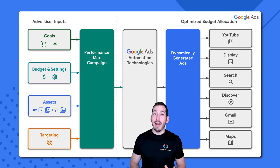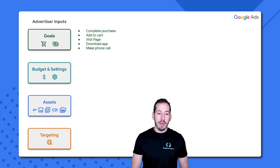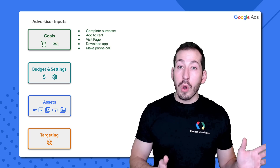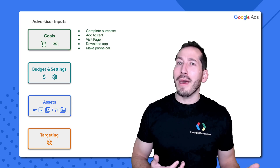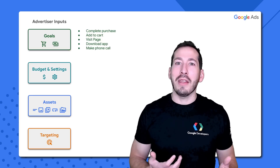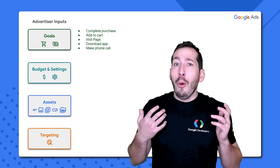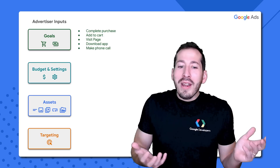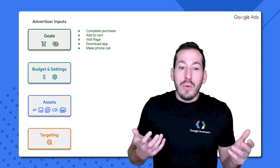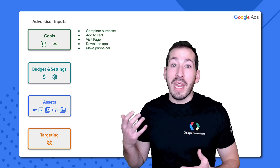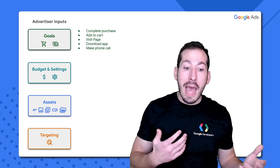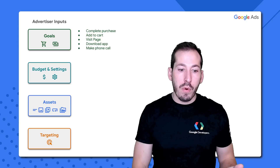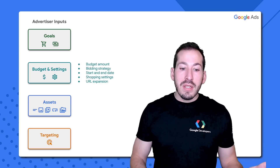We'll get into all of that in a later episode. So let's break this down a little further. As far as goals, this is really the first thing you want to be thinking about as you start planning your Performance Max campaign. What do you want it to do? Do you want someone to complete a purchase? Do you want people to add items to their cart, visit pages, download apps, and so forth?